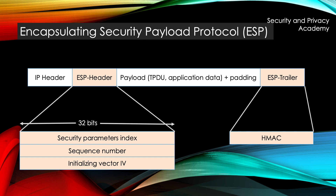Contrary to the AH protocol, in transport mode the HMAC is only calculated over the ESP header and not the payload. The IP header, and thereby the origin of the packet, is not authenticated. Also, the IP header is not encrypted, meaning that the origin of the datagram is not concealed.